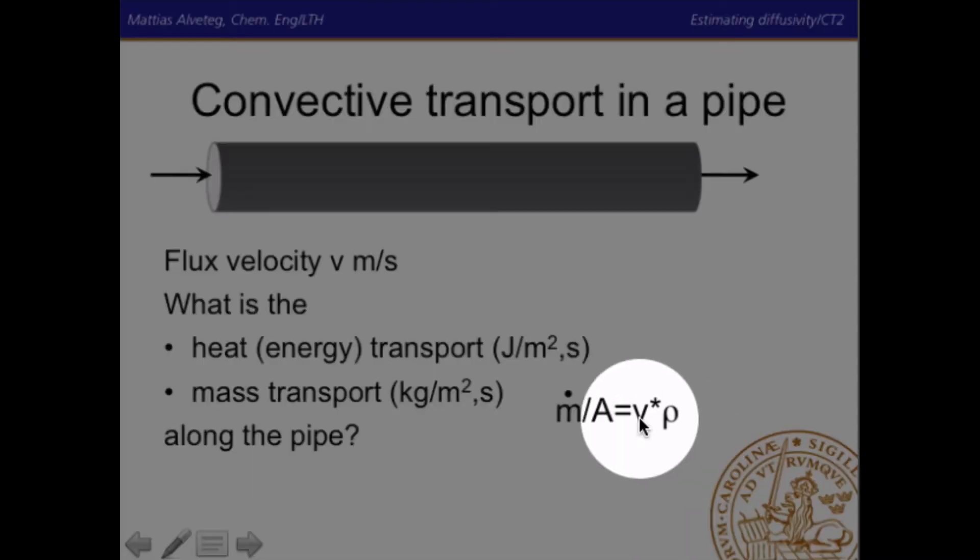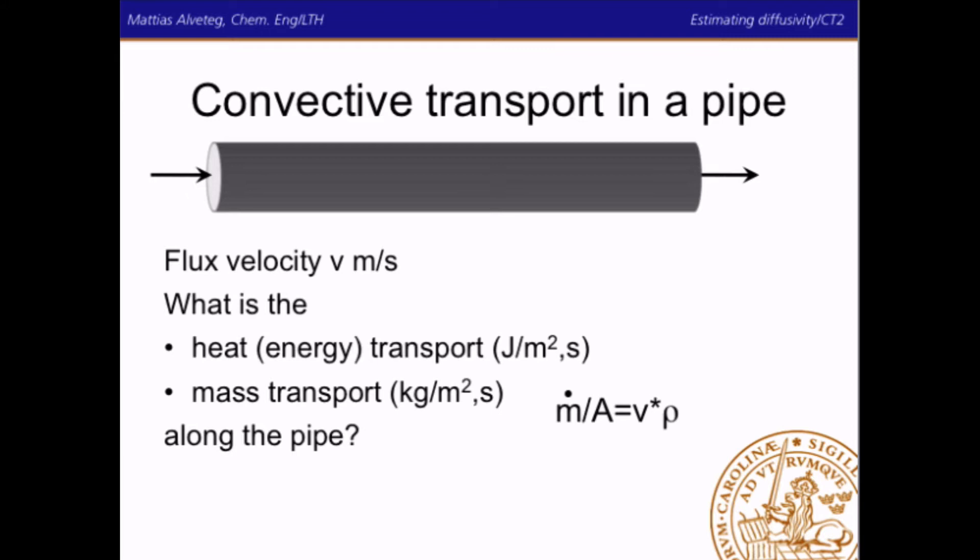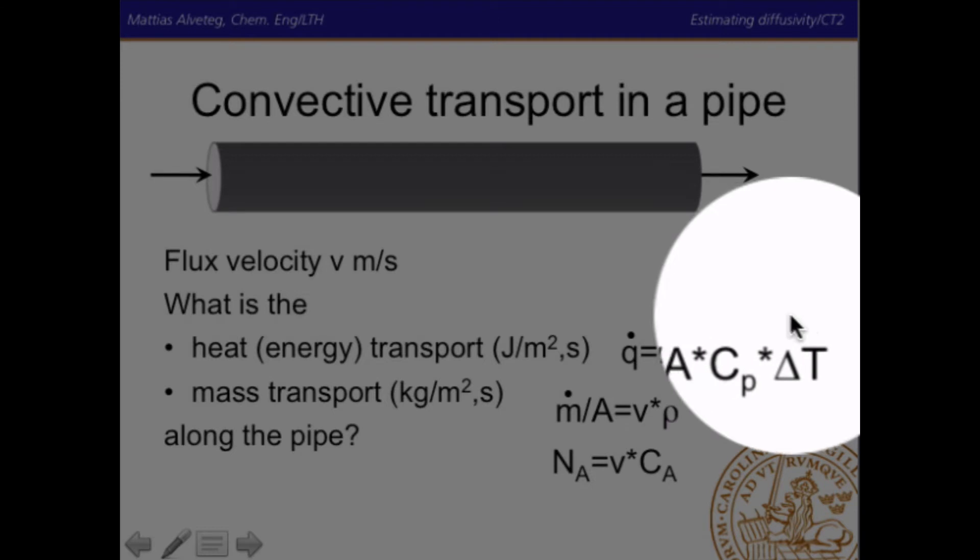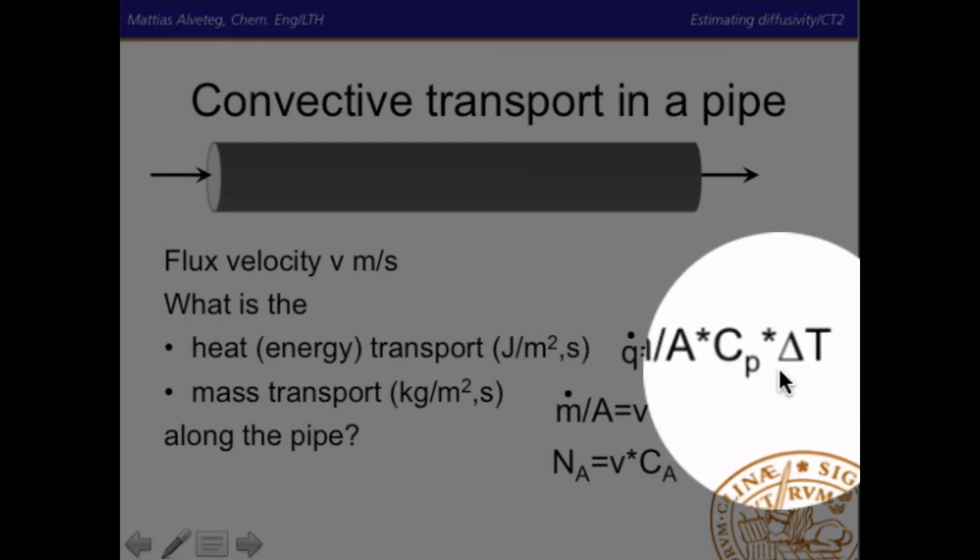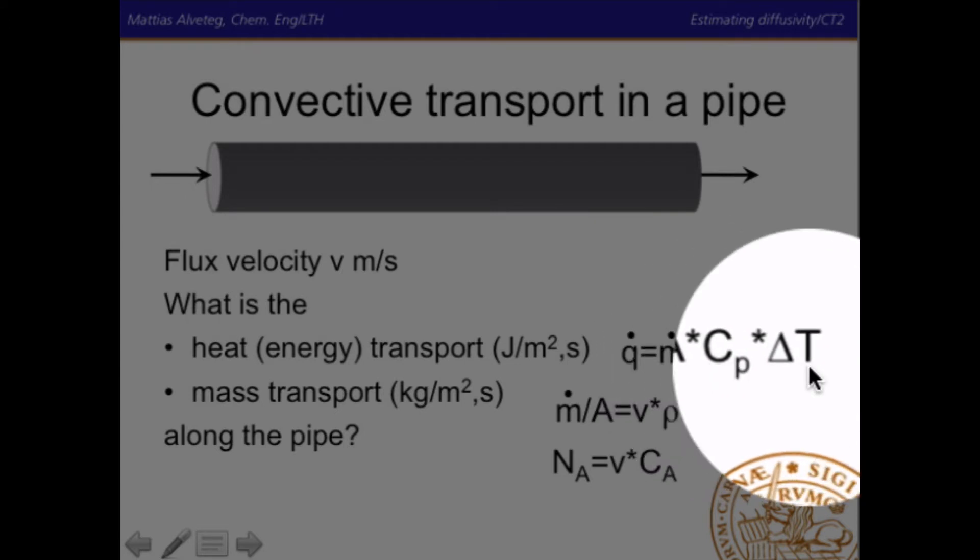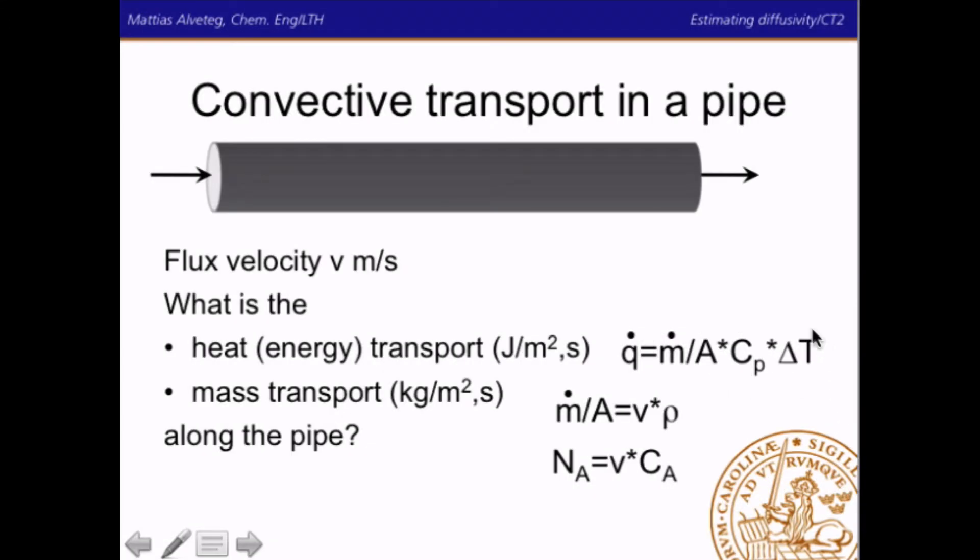That simply equals the velocity times the density. So, we have meter per second there and kilogram per cubic meter there, so therefore we get kilogram per square meter a second. If you instead want to have the molar transport, of for example substance A, you take the velocity again times the concentration of A. And for the heat transport, well then we have to have some temperature that we relate to that we say that at that temperature we have no heat, no energy stored. It's a bit strange way to put it but that's a simplistic way to view it. So, q dot equals m dot divided by the area and then times the so-called heat content. That's not entirely correct to call it that. But anyway, cp times delta t tells you how much energy is needed to rise it to that temperature.